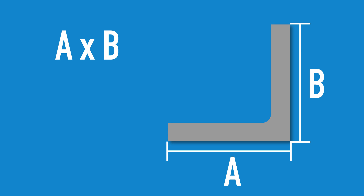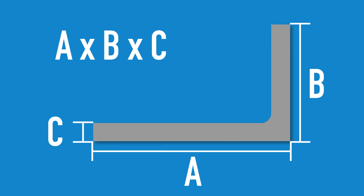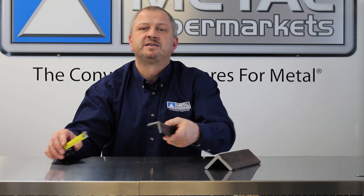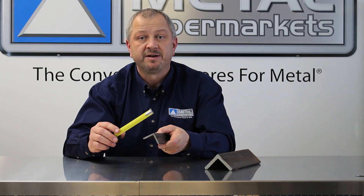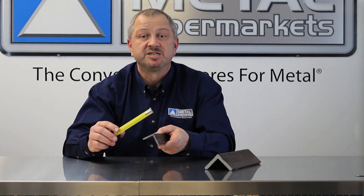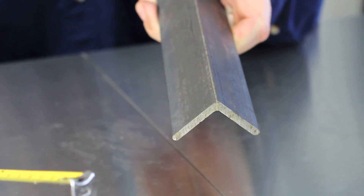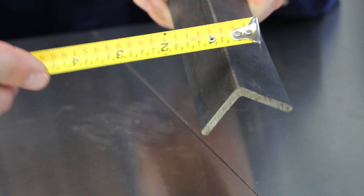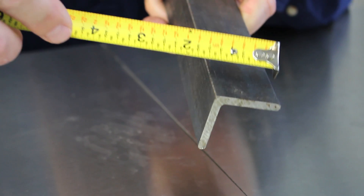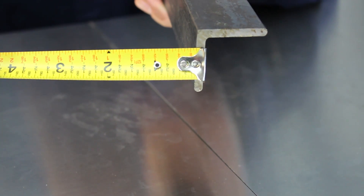Steel Angle is measured using three dimensions: the length of each leg and the leg thickness. In the case of unequal-legged angles, the length of the longest leg always comes first. When measuring the lengths of each leg, you always want to measure the outside, where the leg is longest. In this case, our equal-legged angle is inch and a half by inch and a half by three sixteenths.